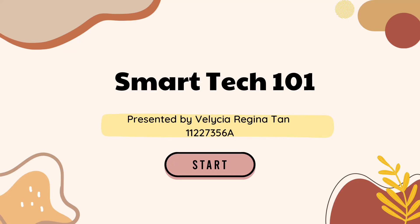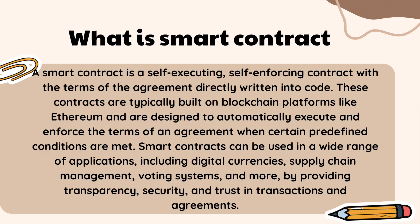In this video I want to present about what is a smart contract. A smart contract is a self-executing, self-enforcing contract with the terms of the agreement directly written into code. This contract is typically built on a blockchain platform and is designed to automatically execute and enforce the terms of an agreement.